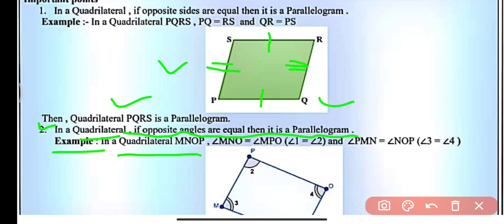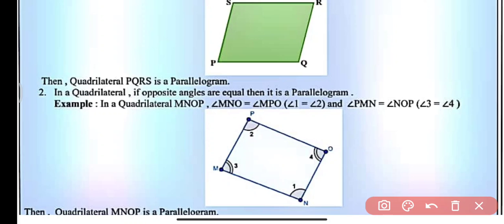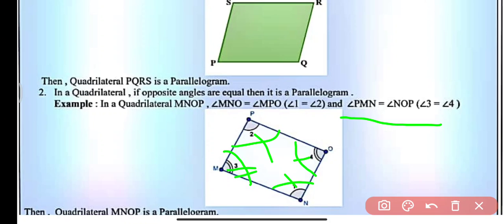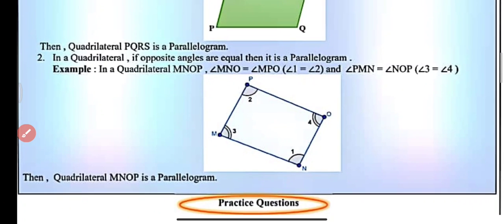Similarly, in a quadrilateral if opposite angles are equal, then the quadrilateral will be called a parallelogram. So in quadrilateral MNOP, if angle MNO (angle 1) equals angle MPO (angle 2), and angle PMN (angle 3) equals angle NOP (angle 4), then the quadrilateral MNOP will be a parallelogram.